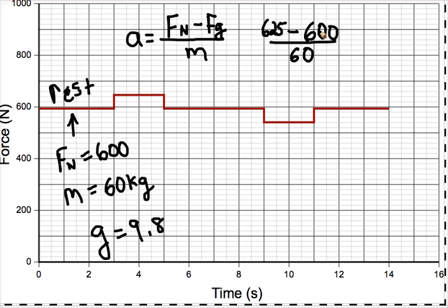From this, we can get the acceleration of the elevator. Once we have the acceleration of the elevator, we can then find the speed of the elevator when it reaches its top speed based on the time. We can see that the acceleration region lasted for two seconds.